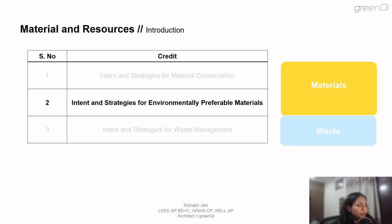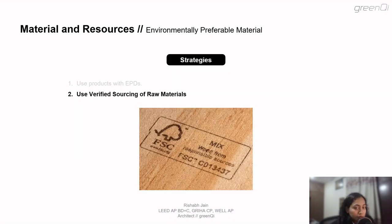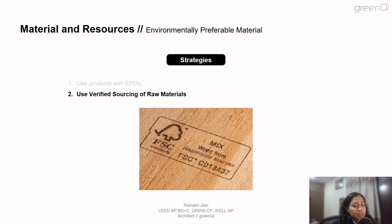Moving on to environmentally preferred materials — talking about other strategies that define a product as environmentally friendly. We also need to source products that have a verified source of their raw materials. This strategy corresponds to the credit Building Product Disclosure and Optimization towards the sourcing of raw materials. The project team has to select products verified to have been extracted in a responsible manner, without harming the environment.